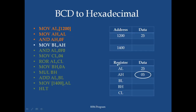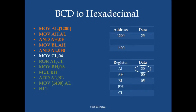AH is ANDed with 0F to get 05, so the lower order digit is separated out. A copy of that is saved into BL. The next instruction is AND AL, F0 — when that executes, 25 becomes 20, splitting out the higher digit 2.